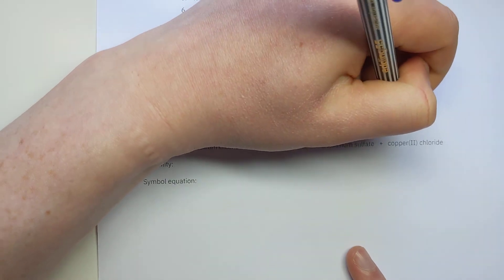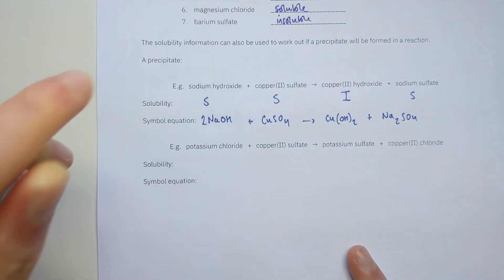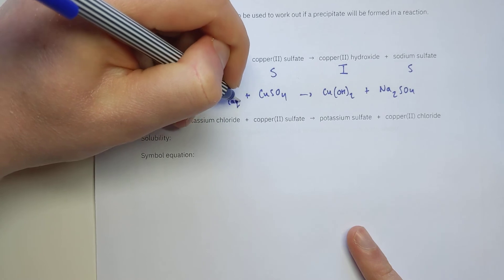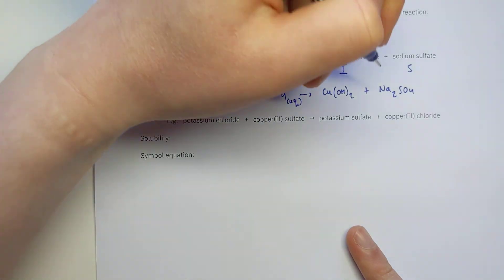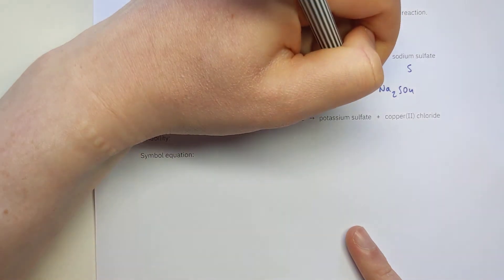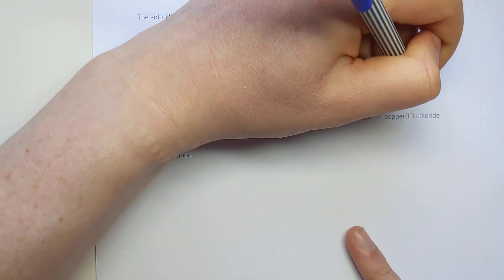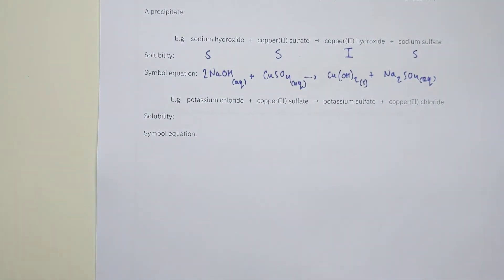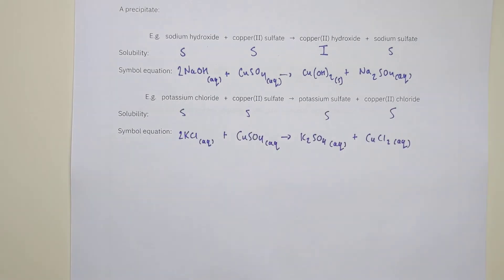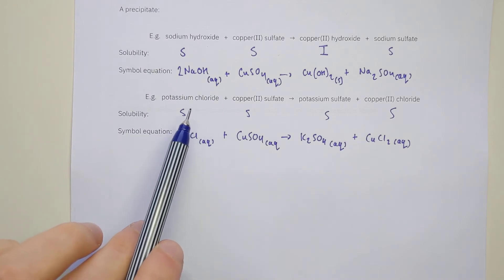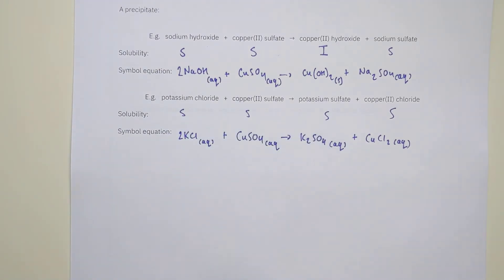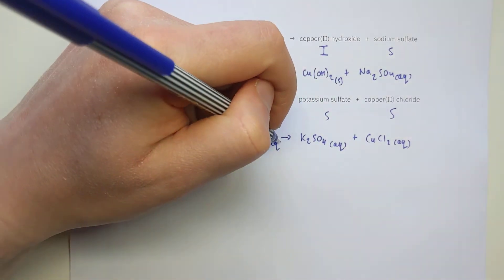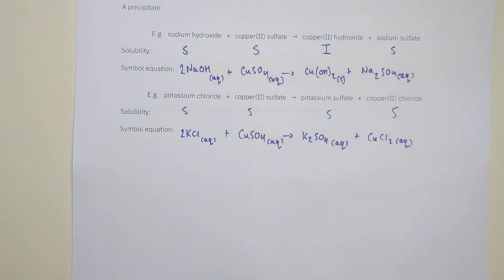State symbols are important here: if a substance dissolves, it's aqueous (aq); if it's insoluble, it's a solid (s). Have a go with the second equation. The answer: all substances in that second equation are actually soluble in water, so everything stays in solution — all get (aq) — and there's no precipitate formed in that reaction.